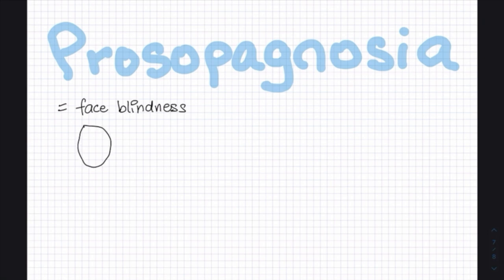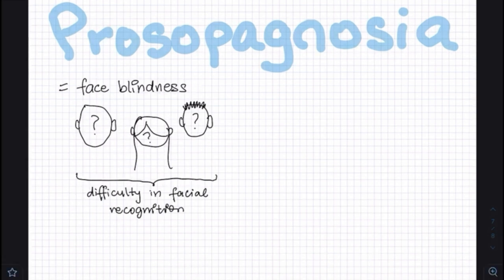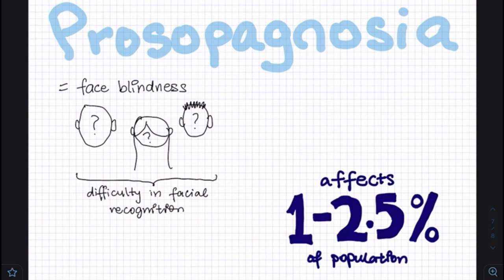Affecting around 1 to 2.5 percent of the global population is a condition known as prosopagnosia, or face blindness. This condition causes affected individuals to experience difficulty in recognizing and distinguishing between faces, where faces are not interpreted or processed any differently from any other objects.